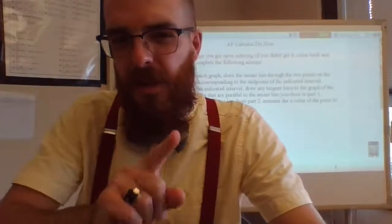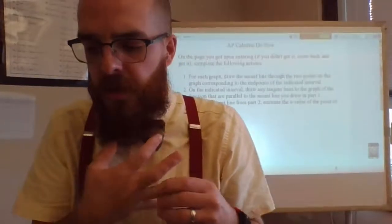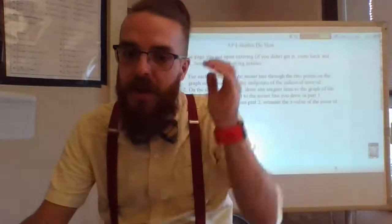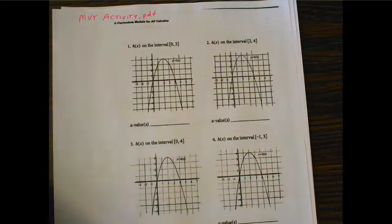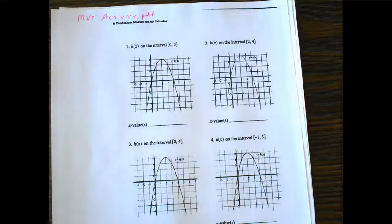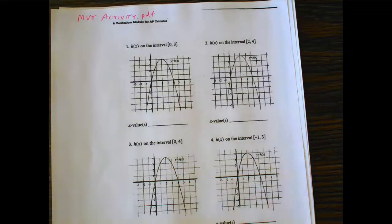All right, everybody. We're going to start things off a little bit differently today. There's going to be an activity. The activity is posted as a PDF in the 4.2 folder. You should be able to find an activity called mvtactivity.pdf. I want you to open that up, and you're going to be doing the first part of today's lesson on that.